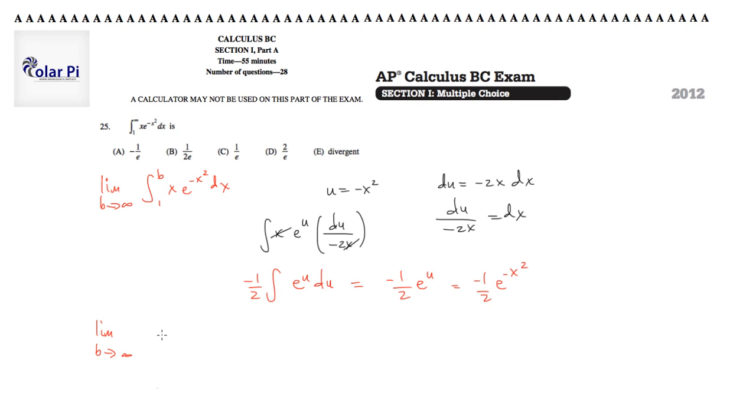So now we have negative 1 half e to the negative x squared evaluated at 1 and b. This is going to say the limit as b goes to infinity of negative 1 half, and I'm going to factor out the negative 1 half, and it's going to say 1 over e to the x squared evaluated at 1 and b.